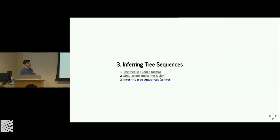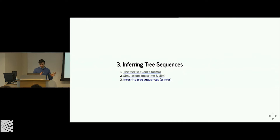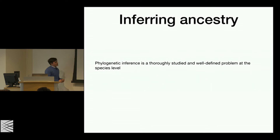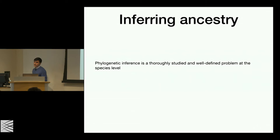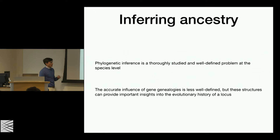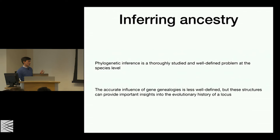Now let's reach the third part: going from sequence data to trees using TS-Infer. One component of inferring ancestry is phylogenetic inference — a well-studied problem, well-defined at the species level. But a related and more difficult problem is inferring the gene genealogy of a specific region. The difference between a pedigree and the gene genealogy at a specific base pair or locus is really important. There are plenty of reasons to infer the gene genealogy of a region.